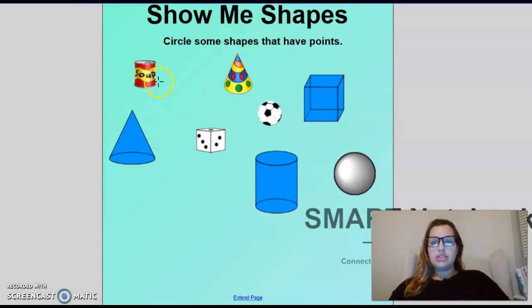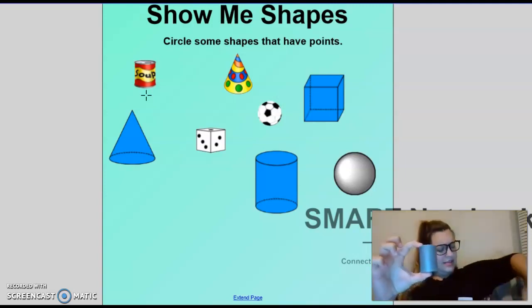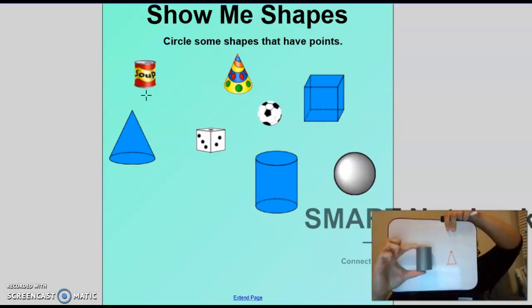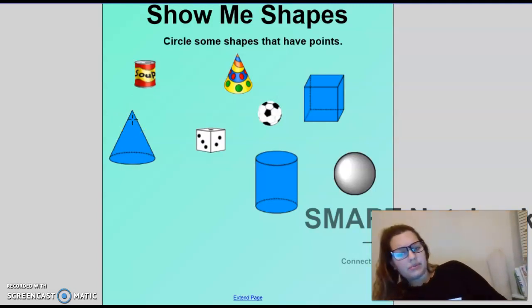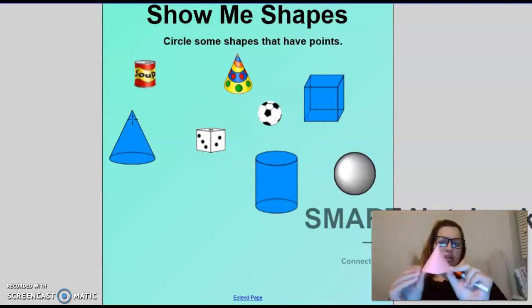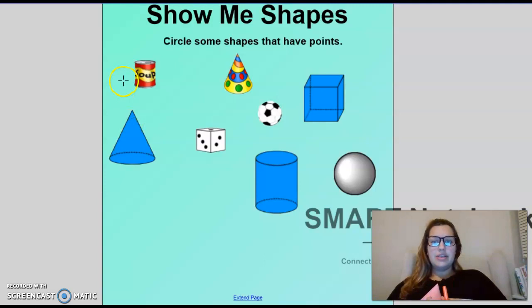So we need to look at this soup can. I'm going to find mine. Cylinder. Are there any points on it? Oh, the cone has a triangle, does it? No, so we're not going to circle that. Let's grab my cone. Look, all the lines meet, there is a point. So are we going to circle it? Does this shape have points? It sure does.